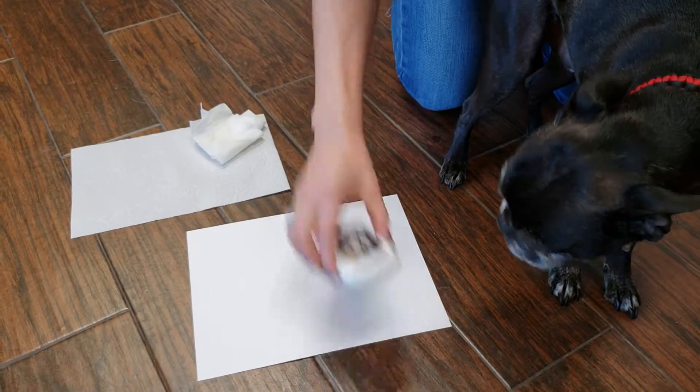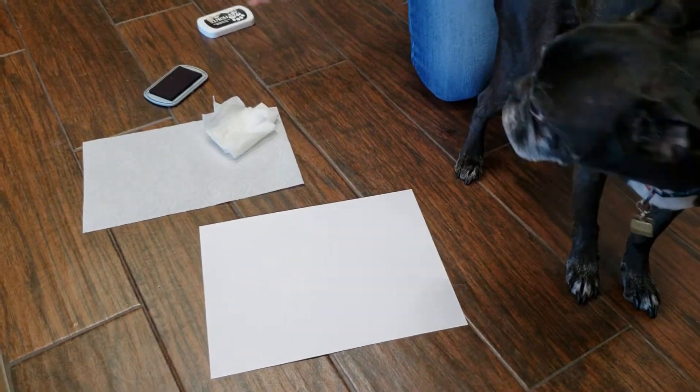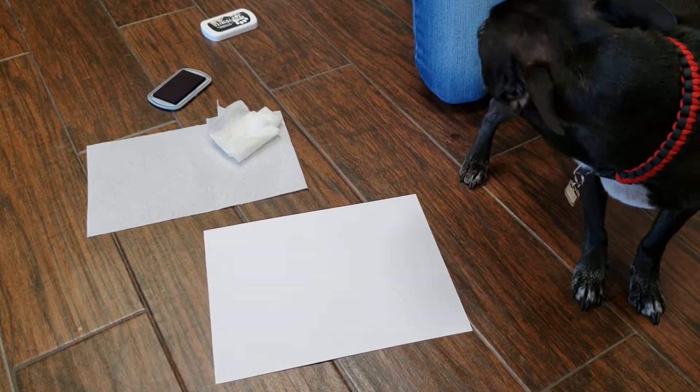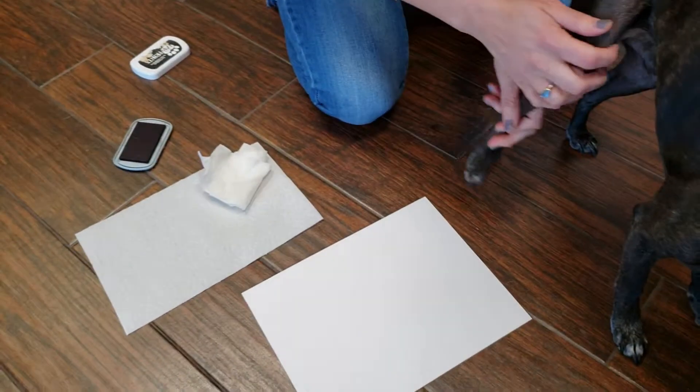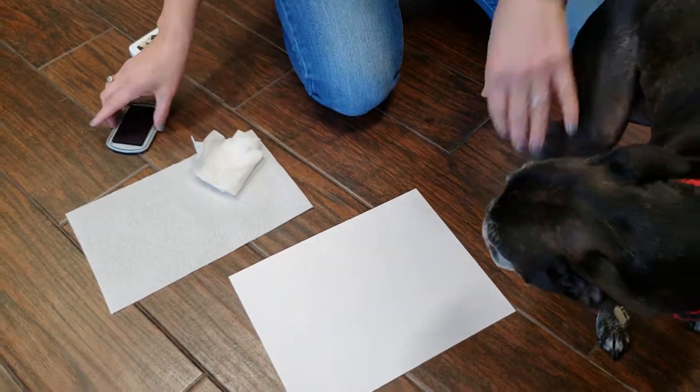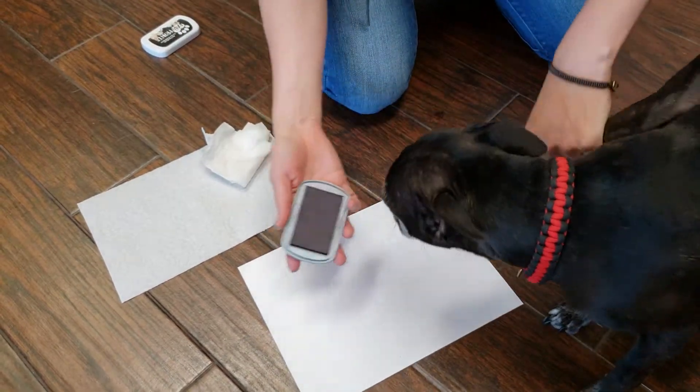The best way to do a paw print is actually to use the hind paw because they'll tend to put all their weight on it versus trying to put their front paw down. So just take the ink pad.